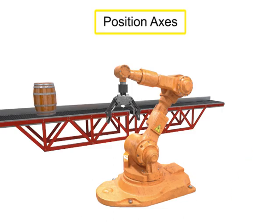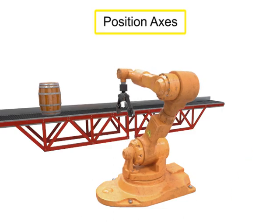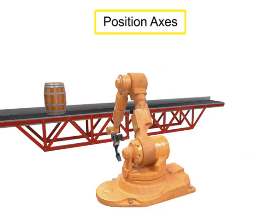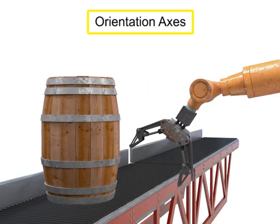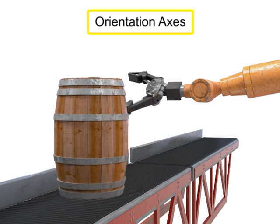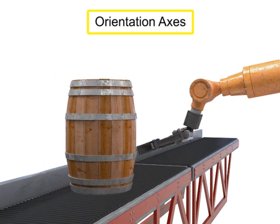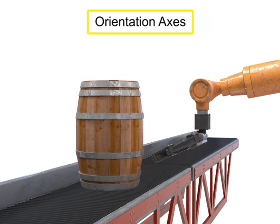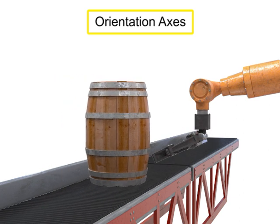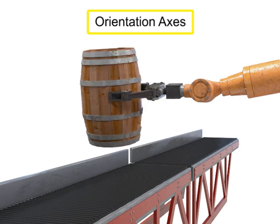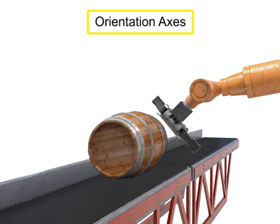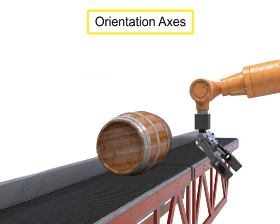The position axes movement at the waist, shoulder, and elbow, along with the orientation axes movement of pitch, roll, and yaw, allow the robot to accomplish its tasks within the work envelope.